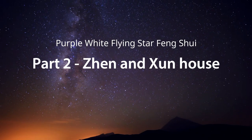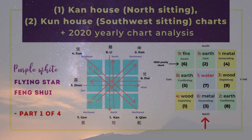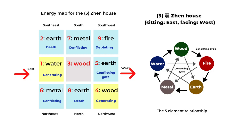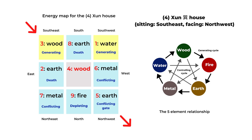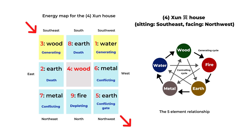Welcome to Picture Healer channel. This is Shi Tian. Today we want to continue last week's purple white flying star chart analysis. Last week we covered the house chart for the number one Kan house and the number two Kun house. Today we will talk about the number three Zheng house and the number four Shun house. The Zheng house sits on the east side facing west, and the Shun house sits on the southeast facing northwest. We will start with the energy map for the Zheng house.